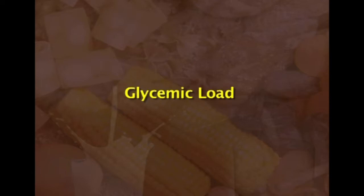To counteract the limitations of GI, we have the concept of glycemic load (GL). GL estimates how much a food will raise a person's blood glucose level after eating it. One unit of GL approximates the effect of consuming one gram of glucose. GL accounts for both how much carbohydrate is in the food and how much each gram of that carbohydrate will raise blood glucose. GL for a serving is calculated as: carbohydrate content in grams multiplied by the food's GI, divided by 100.